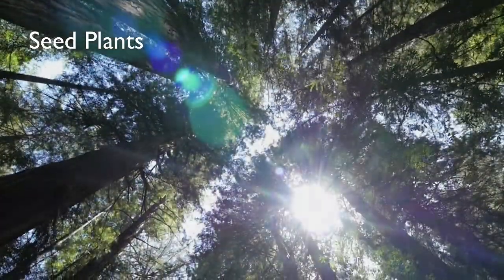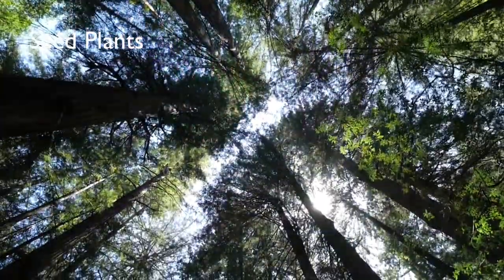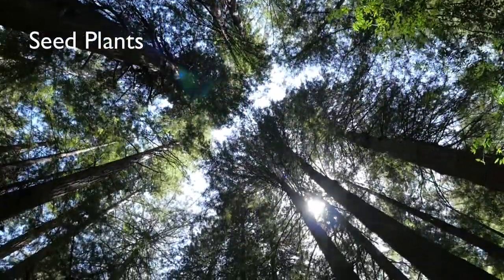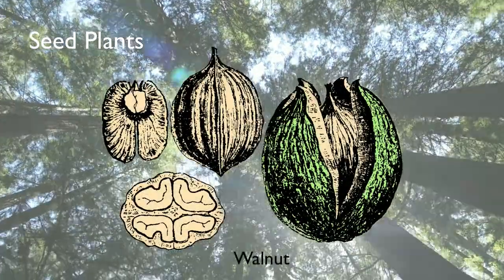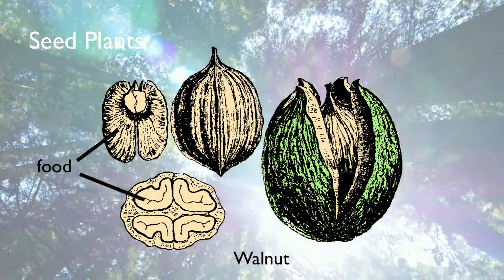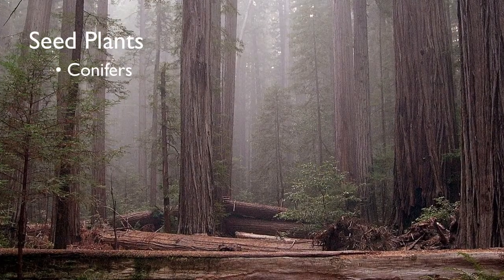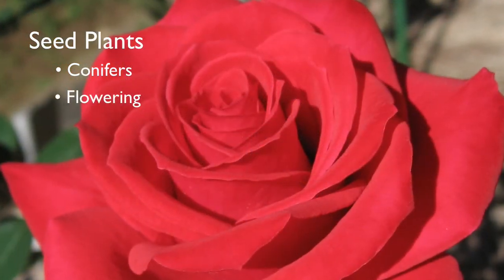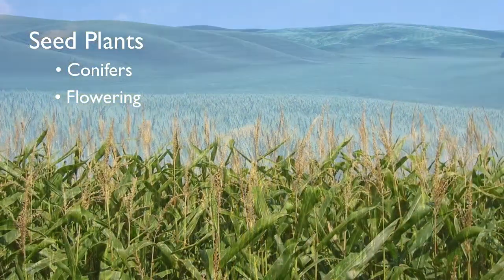Seed plants are the largest group of plants. Like ferns, they have a vascular system. Instead of swimming sperm, seed plants use pollen to transport male sex cells to female eggs during reproduction. Seed plants also make seeds — a seed contains a plant embryo along with a food supply. There are two major groups of seed plants: conifers, like redwoods and pines, use cones for reproduction; and flowering plants, such as oak trees, roses, and most of the plants we eat, use flowers for reproduction.